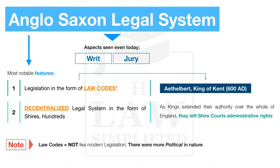Another notable feature of the Anglo-Saxon legal system was how decentralized it really was. Basically, the legal system took on the form of what is known as shires as well as hundreds. When the king extended his authority holistically over the country — in this case England — the shire courts, considered in the context of a municipality, were left with the basic administrative authority and rights therein.